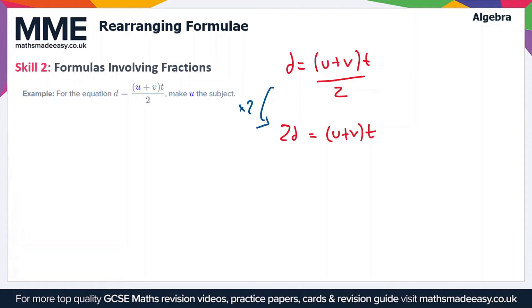The next thing we want to do is remove the brackets and the t, so we'll do that by dividing by t. We get 2d/t = u+v. We're almost there - all we have to do now is subtract v from both sides and that will get u on its own. So we get 2d/t - v = u. This is now the rearranged formula with u as the subject.